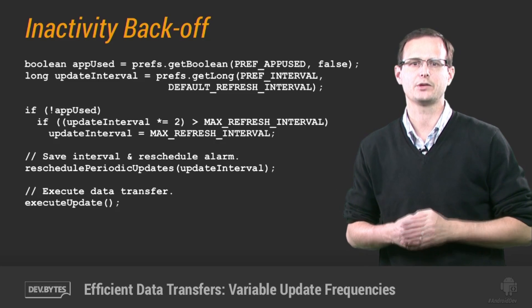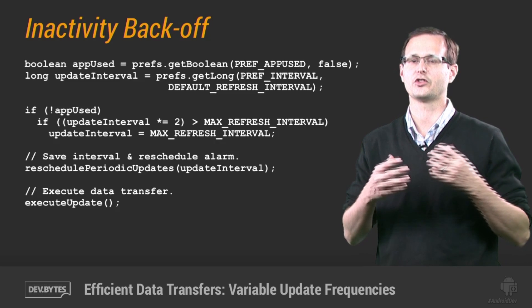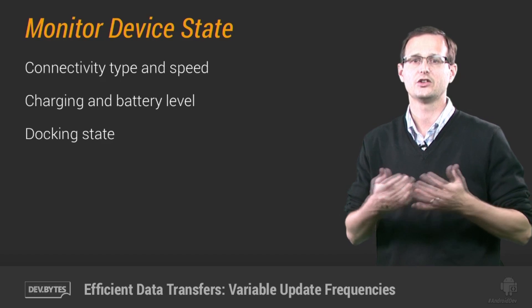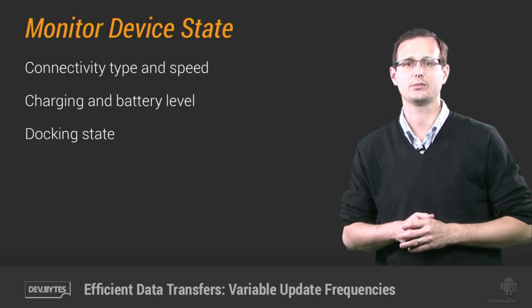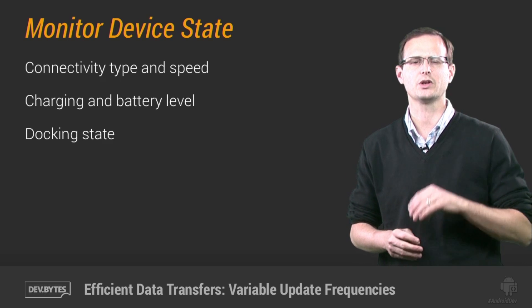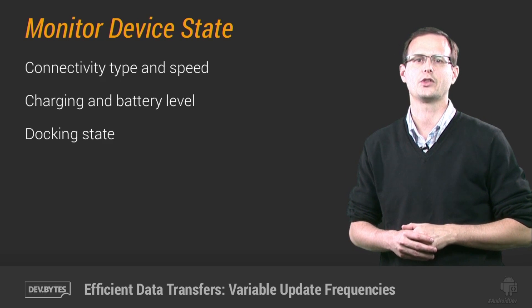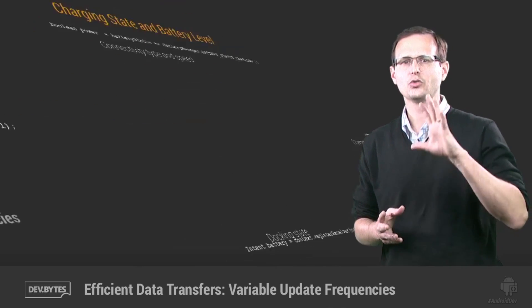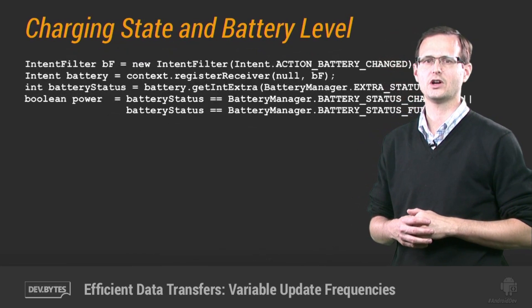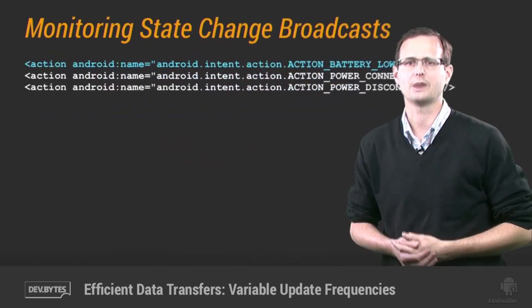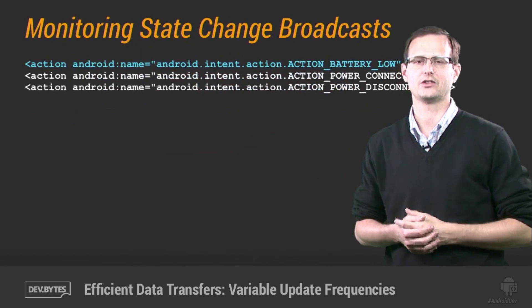If you're reducing the frequency of updates to reduce the battery-hungry use of the cell radio, we might be able to mitigate some of these choices based on the current battery level, charging state, and connectivity type. It's generally good practice to minimize background updates when they don't result in notifications, but the impact of performing updates while the device is charging over AC is negligible, so you can reconsider some of those assumptions when the device is connected to a charger. Conversely, you can listen for a broadcast telling you that the device is low on battery and reduce or eliminate background updates completely until the device is charging.